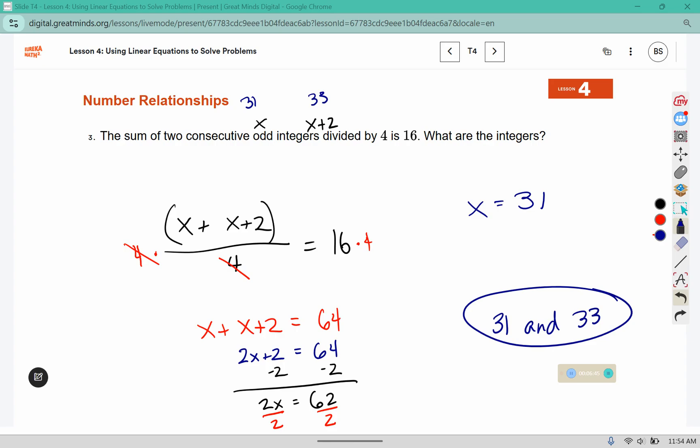If we check, 31 plus 33 would be 64, and 64 divided by 4 is 16.